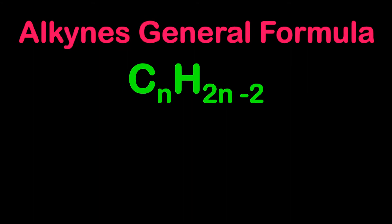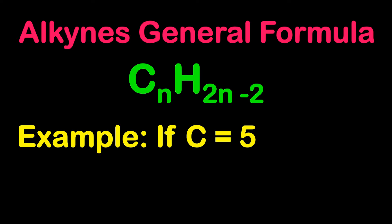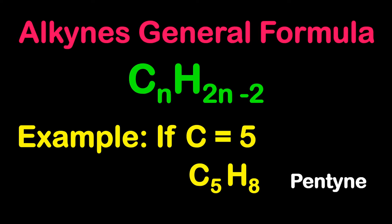Reminding you about the general formula CnH2n-2: if we have five carbons, then we have eight hydrogen atoms, because five times two is ten, minus two gives eight. So since we have five carbons, this compound is called pentyne. You can practice using any number of carbons to calculate the number of hydrogen atoms.